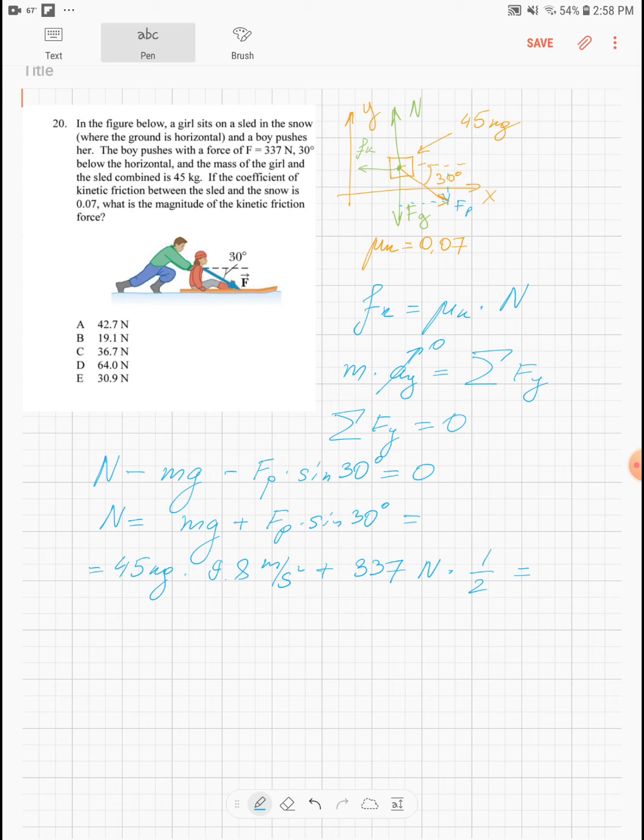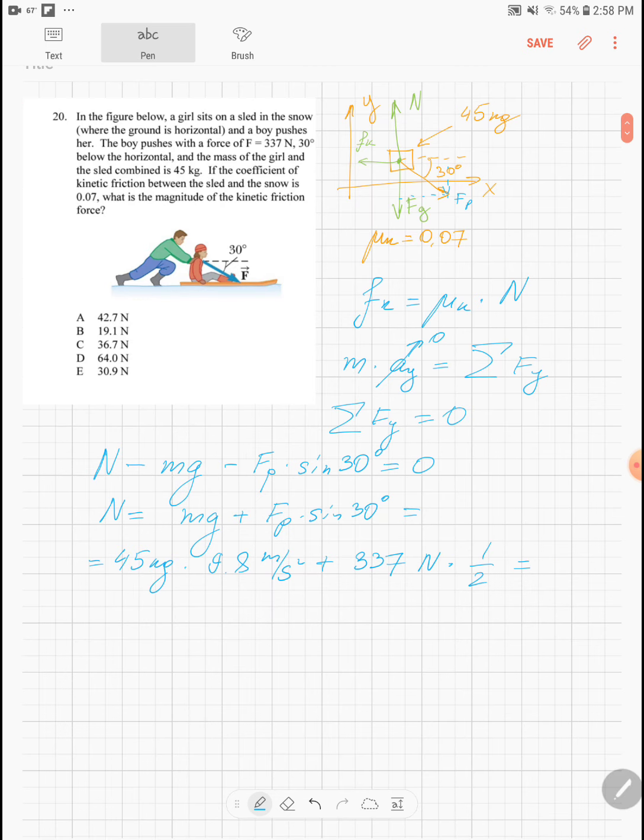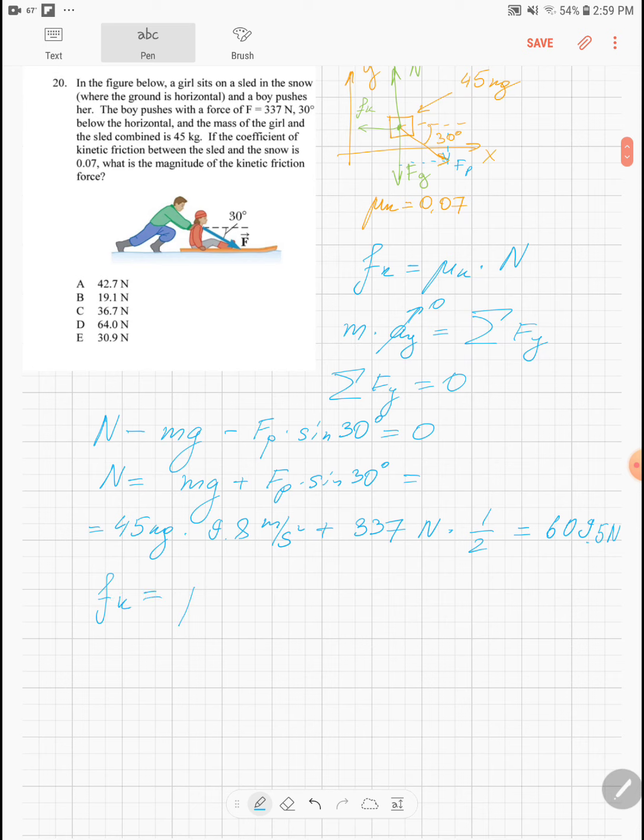So 337 divided by two is 609.5 newtons. So now we can use this result for the normal force and compute the force of the kinetic friction, so it is mu k times N. Substituting these numbers, 0.07 times 609.5 newtons, so we have to multiply the result we obtained before by 0.07 and we will obtain 42.7 newtons, or the answer is A.